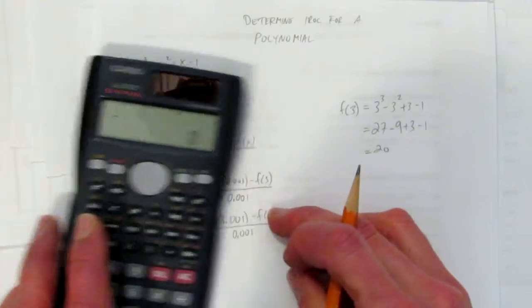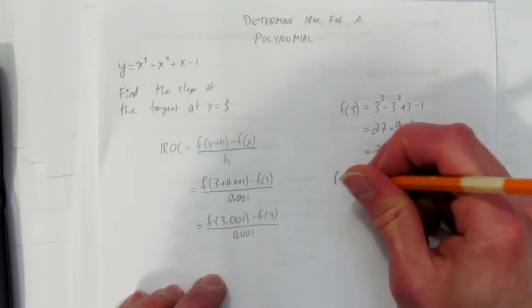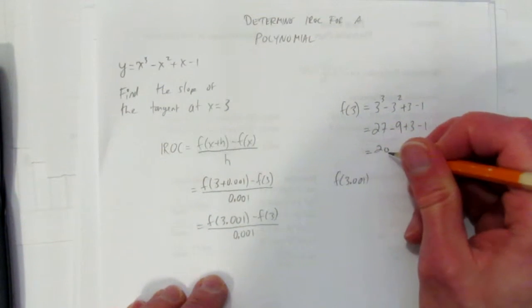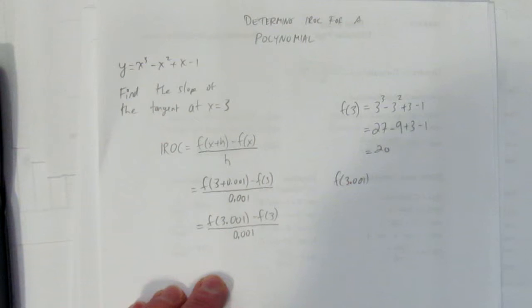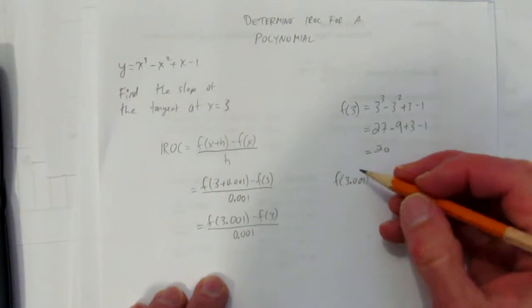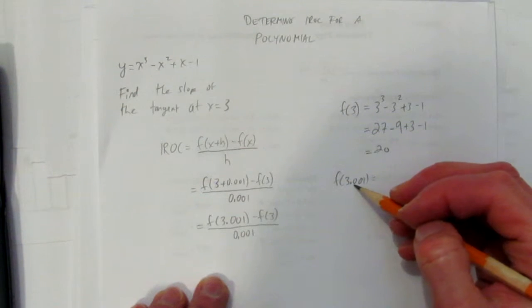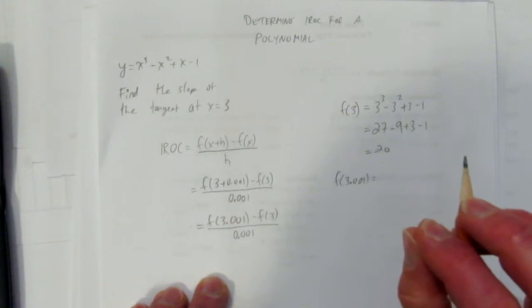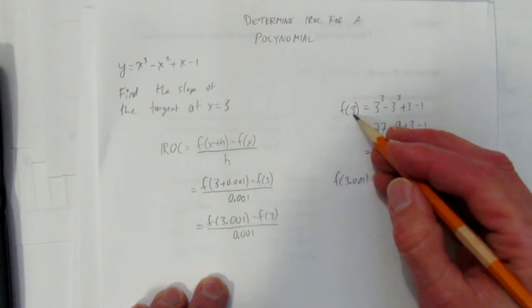Now we're also going to check f at 3.001. Notice, since it's only 1 one-thousandth bigger, it should be very close to 20. If you don't get that, it means probably something you've done has gone wrong. What we're doing here is picking two points that are so close together on our function, it's like we're looking at a specific point. We're going to get the slope between two very close points, which is basically an approximation for the slope.